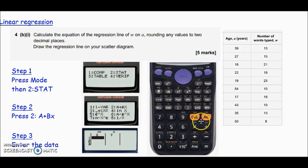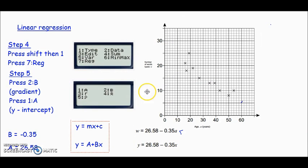Once you've entered all that data, press the AC button. Don't worry, it won't clear your data. Then press shift, then one, because above your number one there's a little stat label. That brings you to this screen, and you want regression - on my calculator it's seven. You can see my A and B are right there. If you want the A value, which is the y-intercept, press one. I got 26.58. Then press shift one again, go back in, press two to get the B value, which is the gradient. That is minus 0.35.